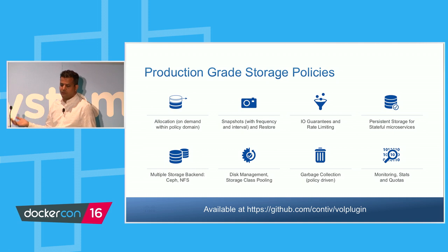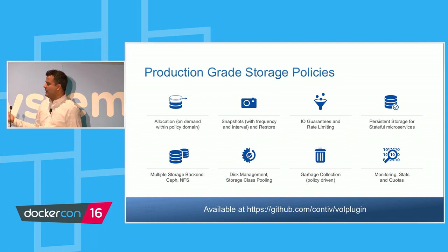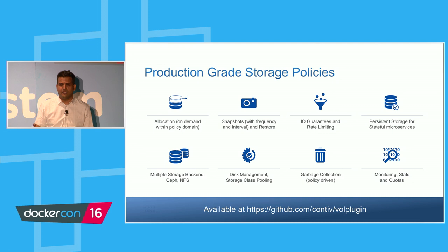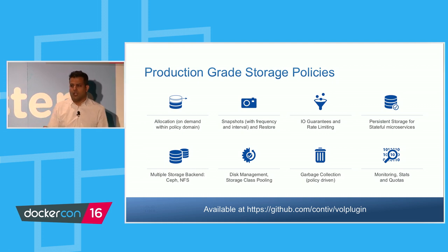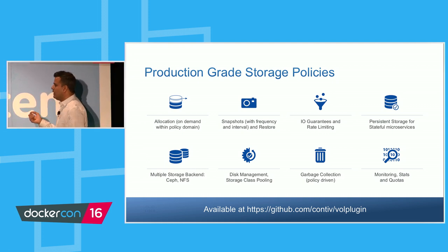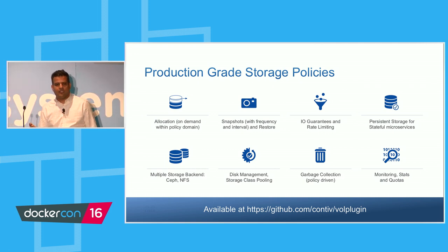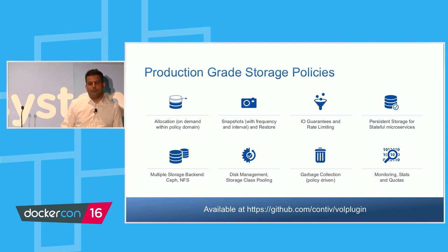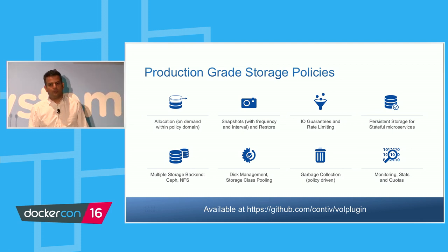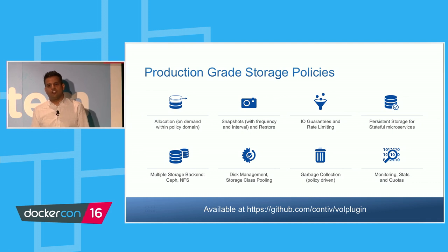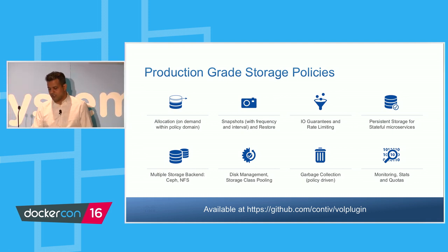On storage, we have similar storage policies — allocation, snapshotting, and IOPS limiting. Persistent storage is a cool feature, similar to what Flocker offers. Our backend storage today includes Ceph and NFS, and we plan to expand that. We can also manage different disks on a server — SSD and spinning disk — handling those aspects. It's called the volume plugin (vol plugin) and is available on GitHub.